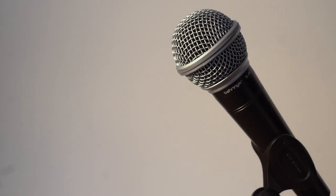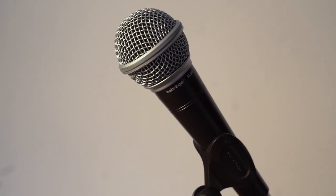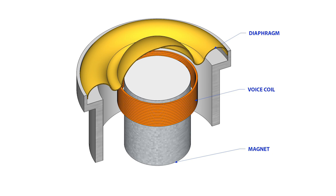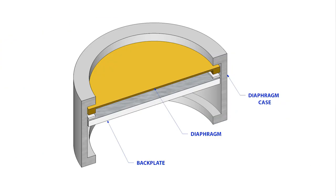Let's start with number one: condenser or dynamic. In front of me I have a condenser microphone, the Behringer SB 78A, and a dynamic microphone, the Behringer SL 84C. They're pretty similar on the outside, but not on the inside. Let's take a look at the capsules. A dynamic microphone has three main components: the diaphragm, the voice coil, and a magnet. Condenser mics' main components are the diaphragm, the back plate, and the diaphragm case that holds everything together.